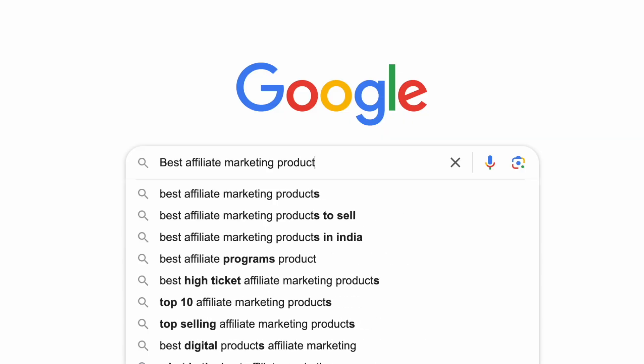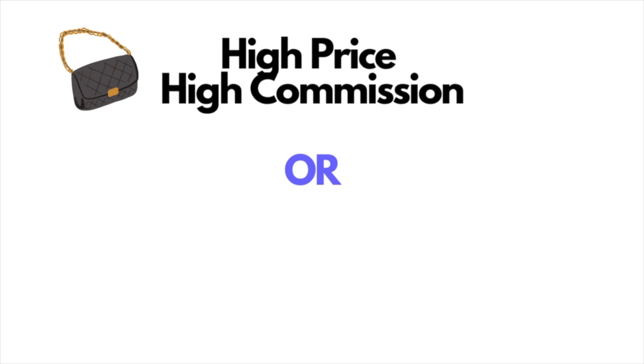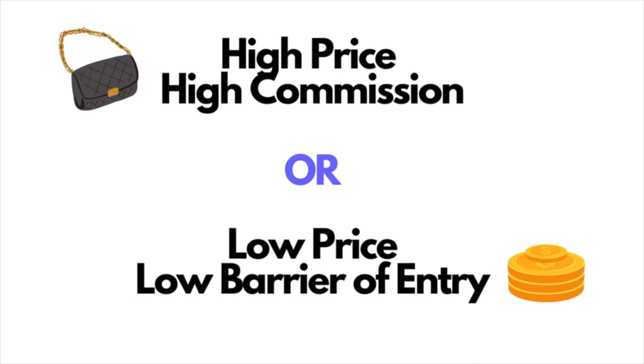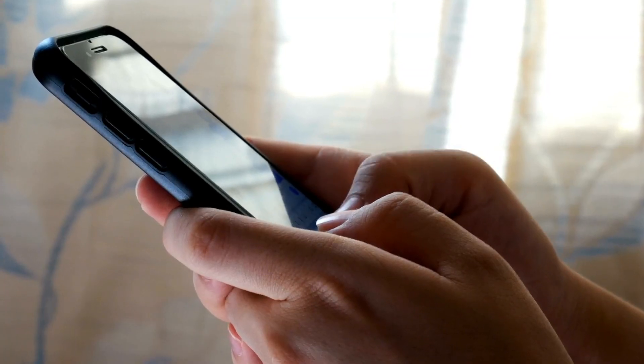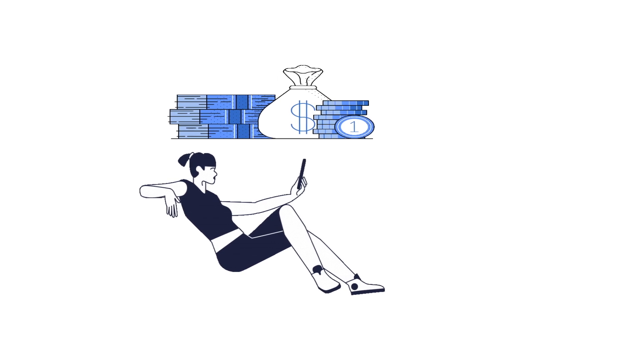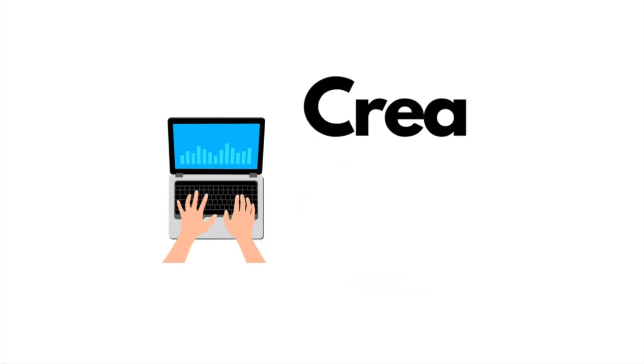It doesn't have to be a very narrow niche, but niching down will help you in the long run. In terms of the types of products, based on my experience, you want to pick either high price, high commission type products, or low price, low barrier of entry products and services. For example, I'm going to be creating an article promoting different survey programs because it's usually free to sign up, and those platforms will pay you for each referral.